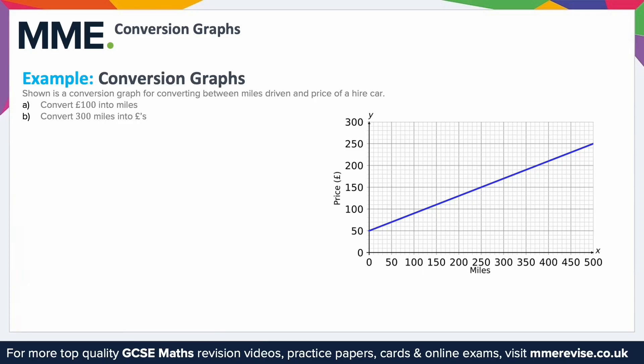Shown is a conversion graph for converting between miles driven and the price of a hire car. If you ever hire a car while on holiday, depending on how far you plan to drive it, you'll be charged a different amount because it causes wear and tear on the car — maybe on the tyres. If someone's going to drive 10,000 miles, they'll be charged more than someone driving 10 miles. This graph lets us figure out how much it's going to cost to travel a certain distance.